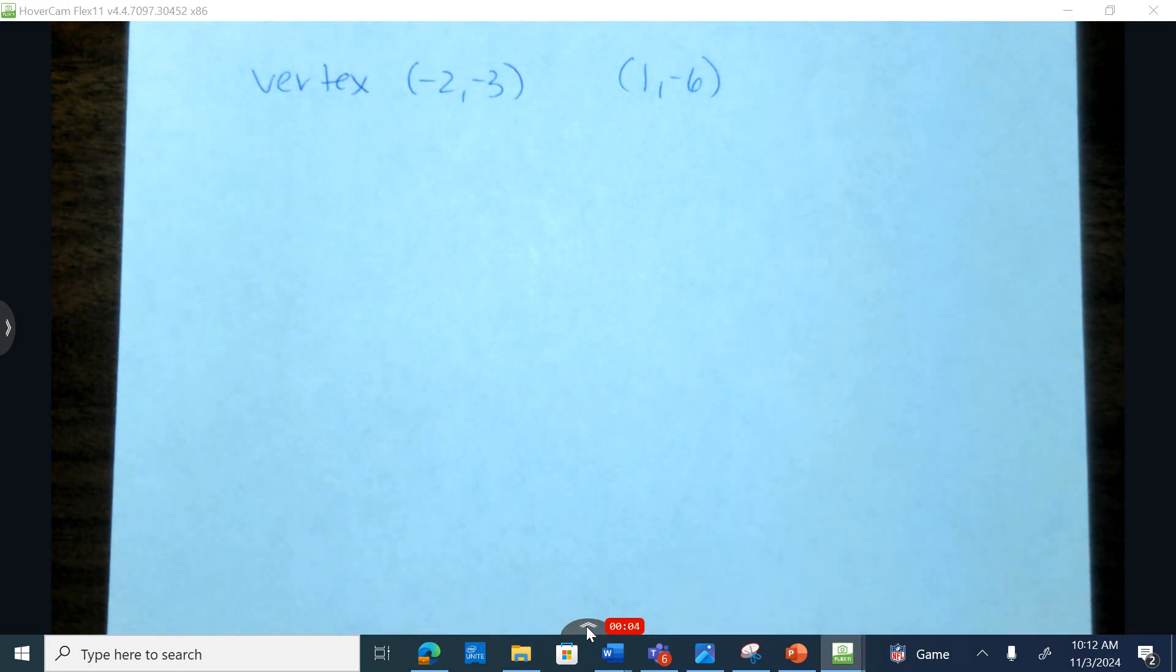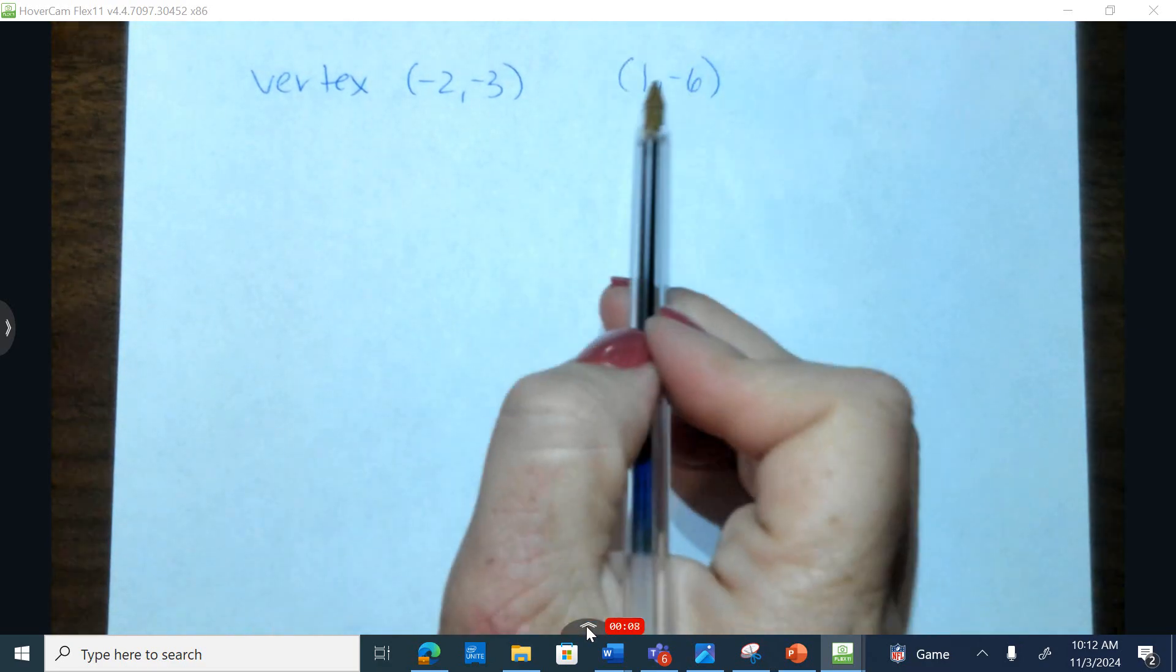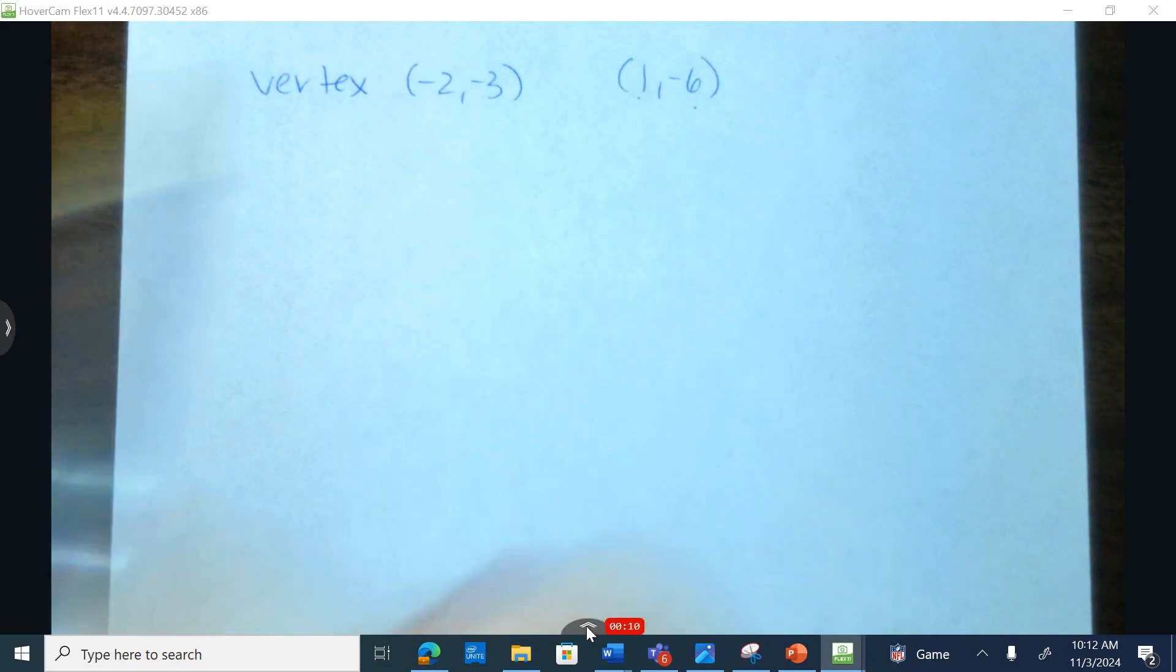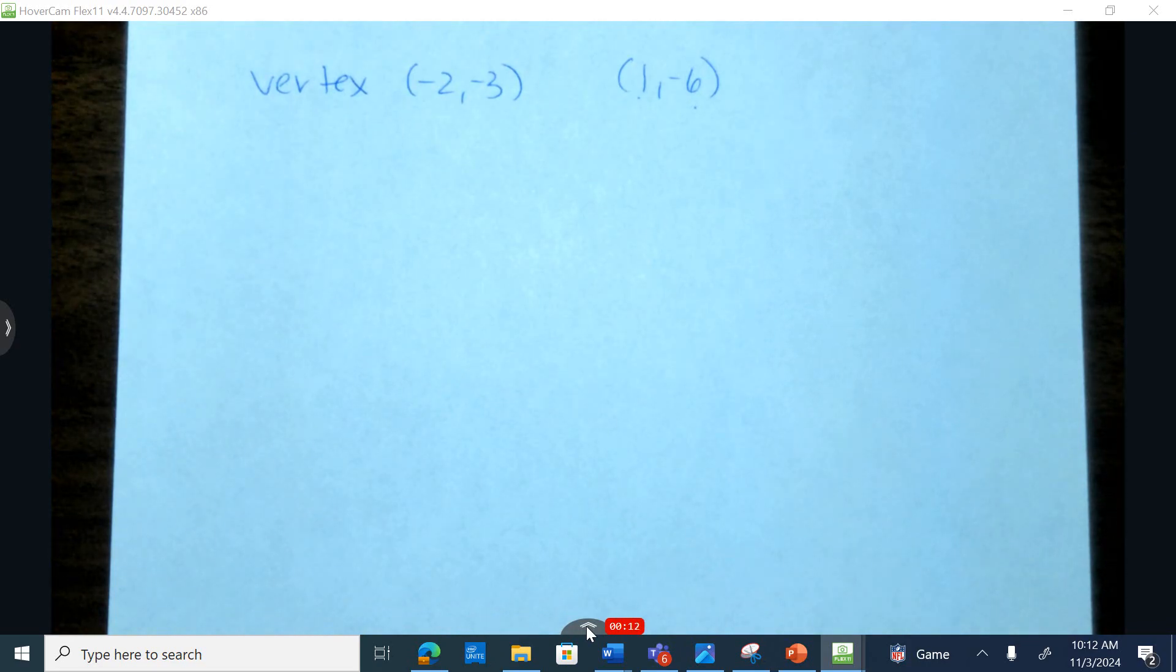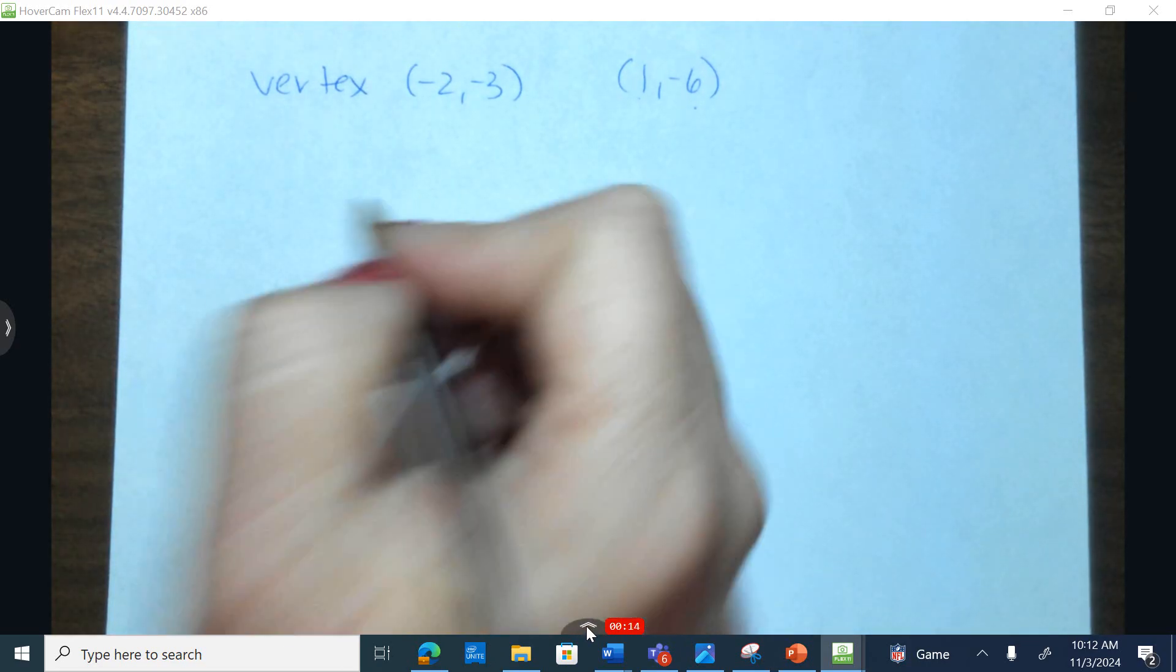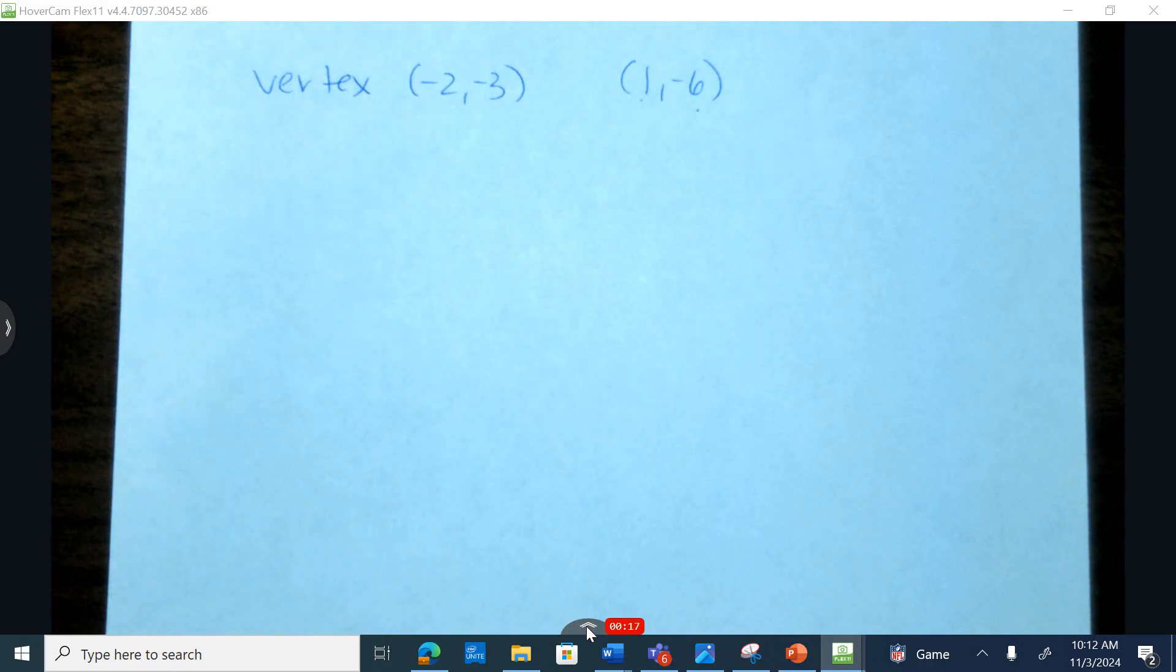Question number 12 from the Unit 5 review provides you with one point, one random point on the parabola and a vertex of negative 2, negative 3. So let's go ahead and write an equation with this given information.